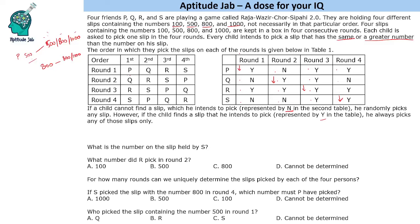Now, logically, if a person is the first to pick, they will definitely get a slip of their choice because all slips are present. Even if you have the lowest or highest number, you can pick the slip of your choice. In round 3, all have Y — meaning all get their choice. This means all of them pick the same number as on their own slip, because if you pick a greater number, someone else will not be able to pick their desired number.